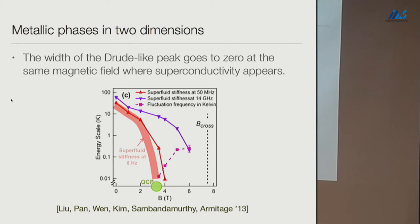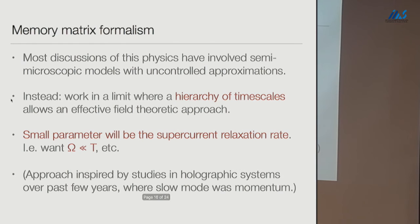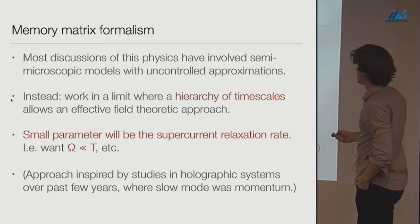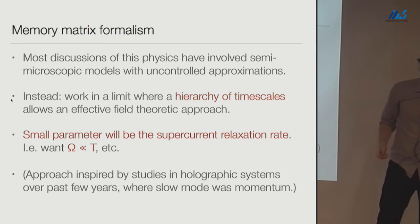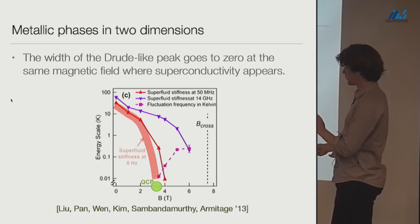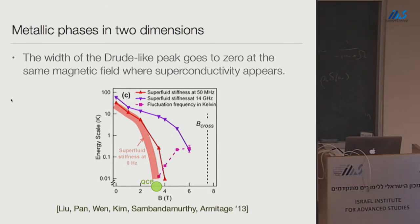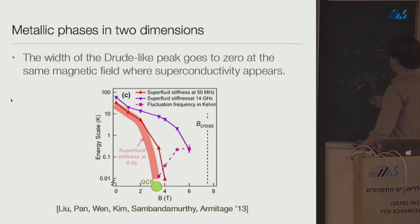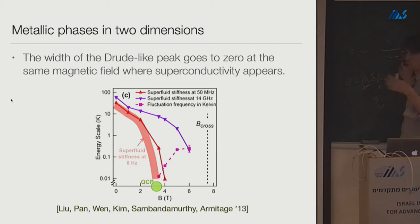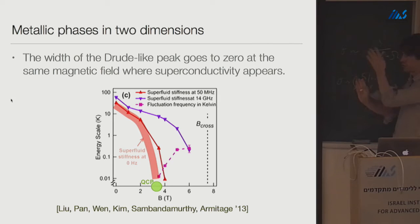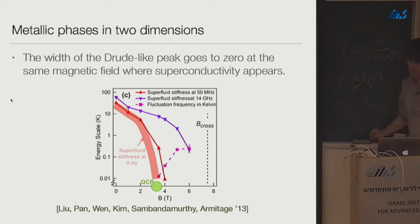As the system goes superconducting, the width of this Drude-like peak goes to zero — the timescale diverges — and simultaneously the spectral weight (coefficient of the delta function) rho_s goes to zero. Coming from the other side into the metallic phase, the Drude peak becomes thin at the same point where superconductivity would set in. If the peak width were just due to normal electron decay there would be no reason for it to vanish at exactly the superconducting transition — this suggests the width is set by fluctuating superconductivity.